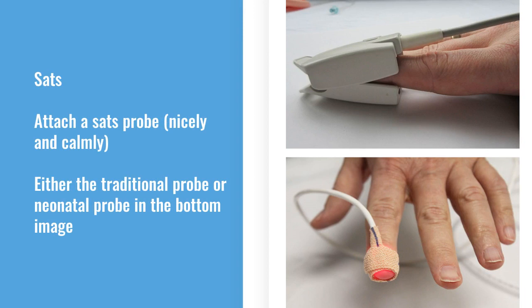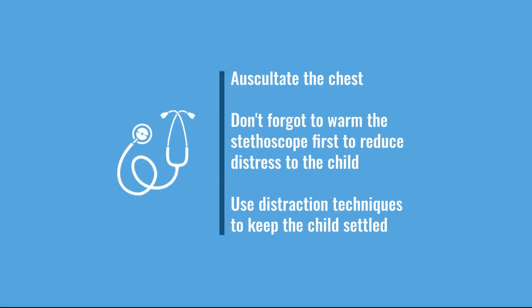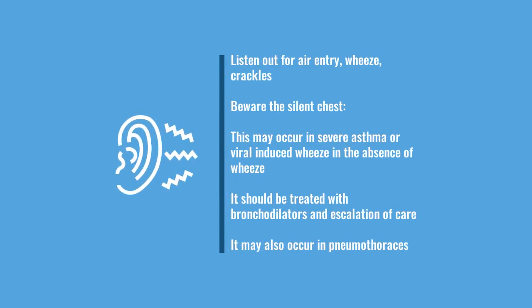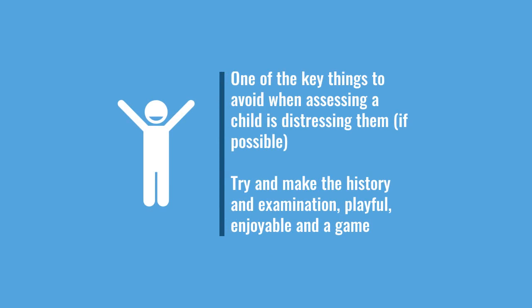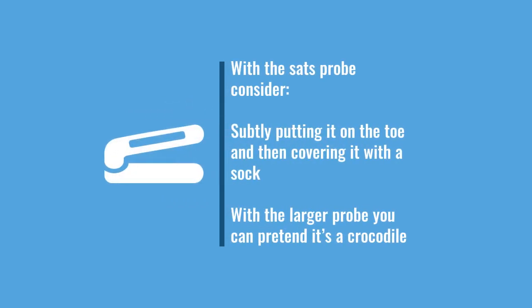Don't forget you have a stethoscope — warm it first, because children will often start screaming if you put a cold stethoscope on their chest. Try to keep the child settled and use distraction techniques, whether that's a play specialist or the parents. Beware a silent chest — that is a medical emergency. Abnormal sounds to listen for include wheeze in asthma, or crepitations in something like bronchiolitis. One of the worst things you can do is distress a child: subtly placing the sats probe on the toe, or pretending it's a crocodile, helps make it part of a game.